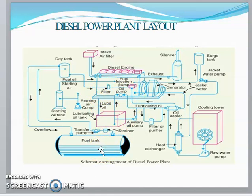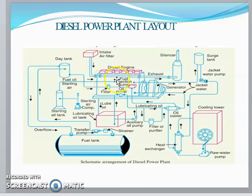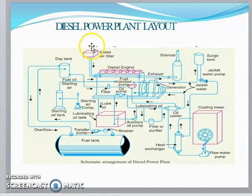Generally, fuel comes from the fuel tank and is sent to a day tank. From the day tank it goes to the engine. The engine works on the four-stroke cycle: suction, compression, power, and exhaust. After expansion, the engine output shaft is coupled with the generator to generate power. The exhaust gases escape from the engine through a silencer, and the air intake system draws in fresh air.